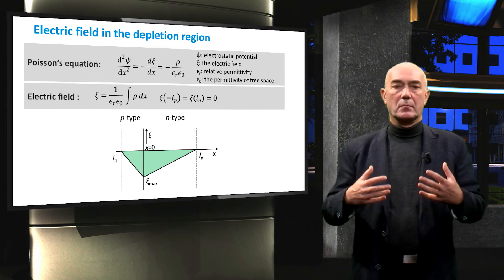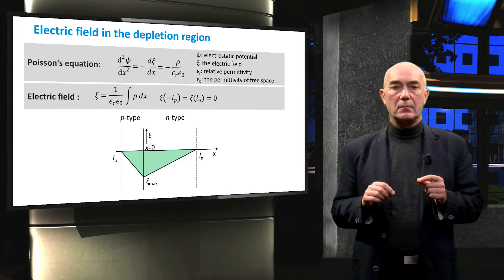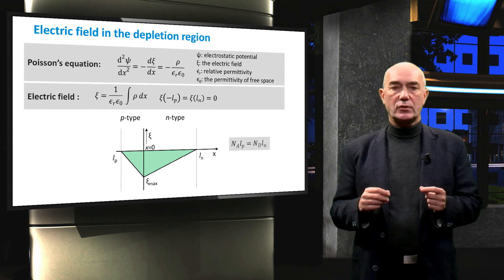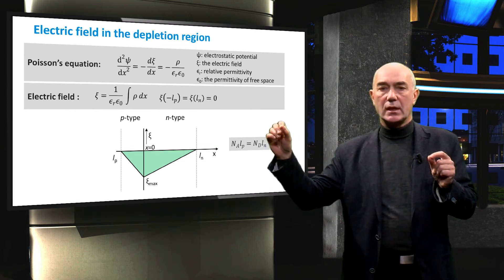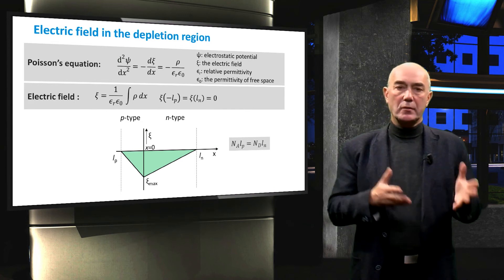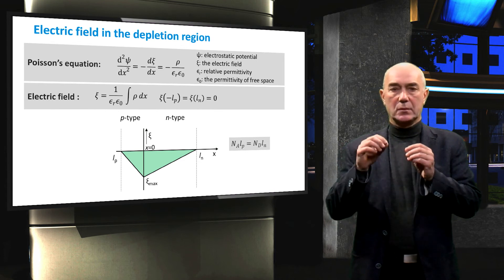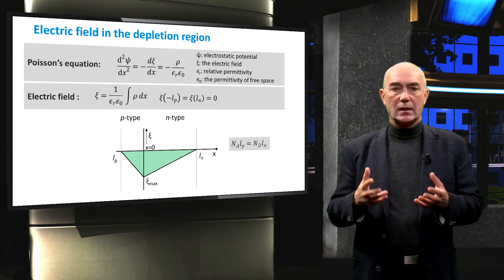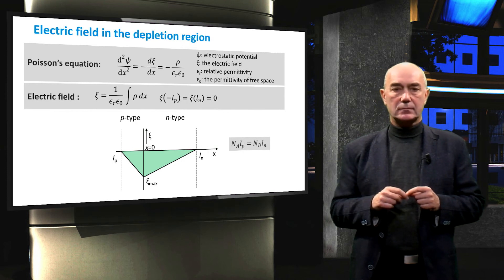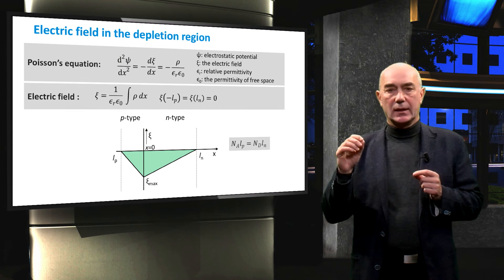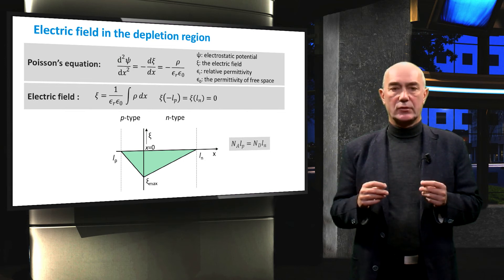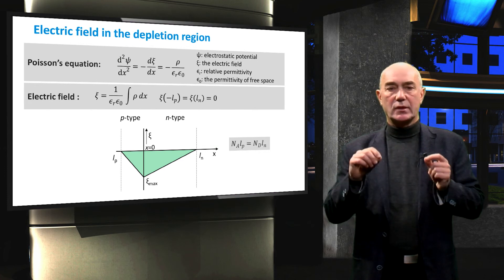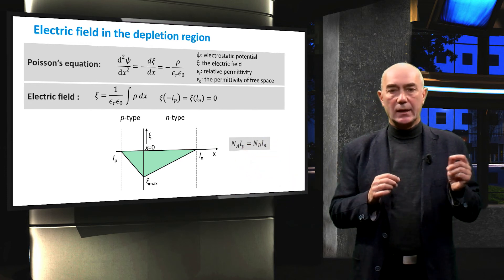The magnitude of the electric field peaks at the boundary between the P- and N-type materials. Since the net charge of a PN junction is zero, the total charge across the depletion region has to be zero. This means that the product of Na and Lp is equal to the product of Nd and Ln. Note also that the electric field is negative in the depletion region, meaning that electrons drift in the direction from the P-type into the N-type region.